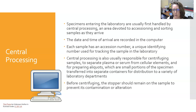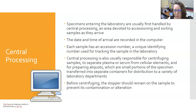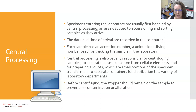Central processing is also usually responsible for centrifuging the samples to separate the plasma or serum from the cellular elements, and for preparing aliquots. Aliquots are small portions of the specimen that can be transferred into separate containers for distribution to a variety of lab departments.